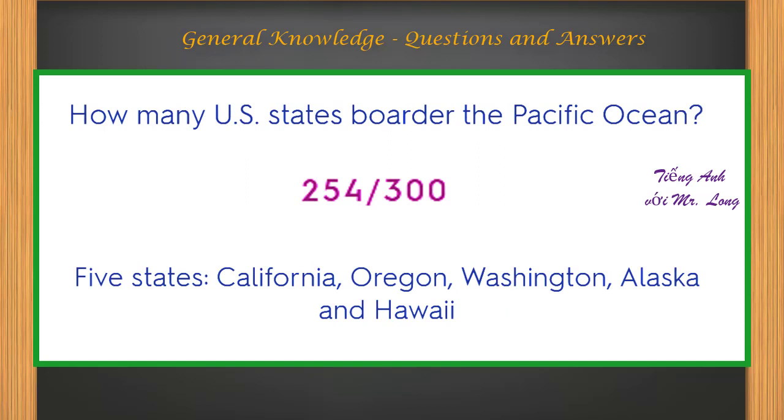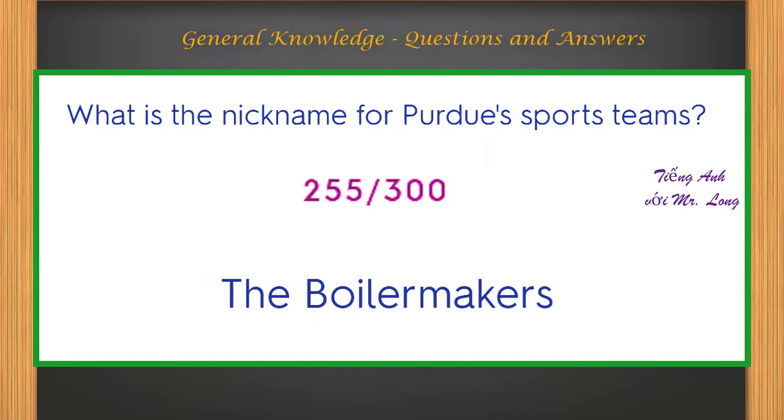How many U.S. states border the Pacific Ocean? Five states: California, Oregon, Washington, Alaska, and Hawaii. What is the nickname for Purdue sports teams? The Boilermakers.